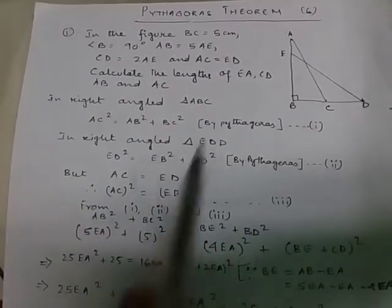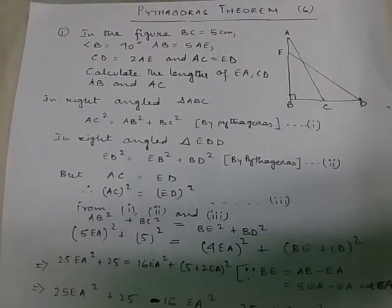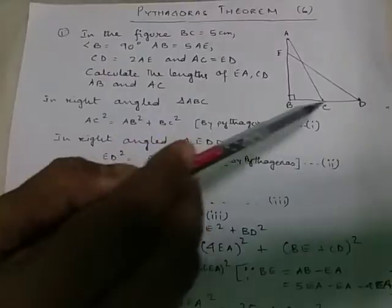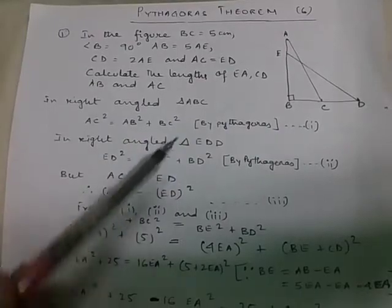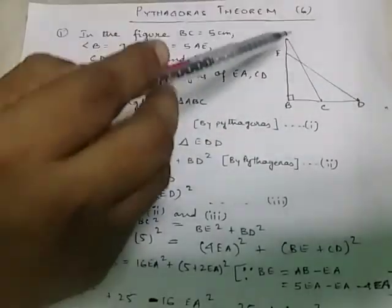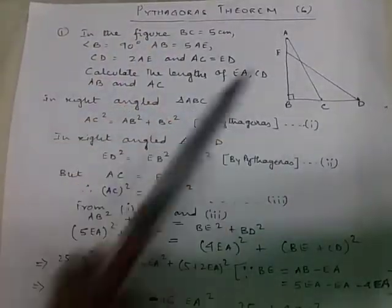Let us consider triangle ABC. This is ABC, right angle at B. From Pythagoras, AC² equals AB² plus BC². Equation number 1.